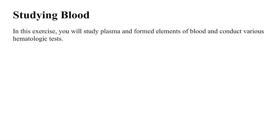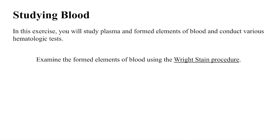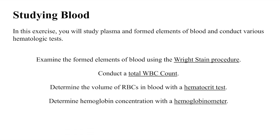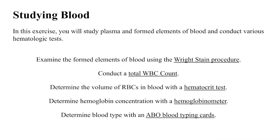In this exercise, we'll study plasma and formed elements of blood, and conduct various hematologic tests. These activities include examining the formed elements of blood using the Wright stain procedure, conducting a total white blood cell count, conducting a hematocrit test, determining hemoglobin concentration with a hemoglobinometer, and blood typing.